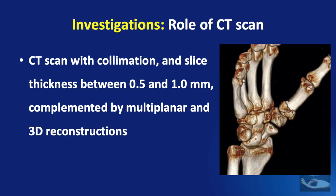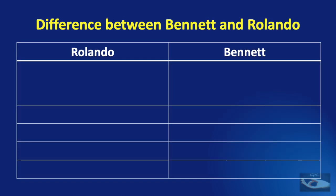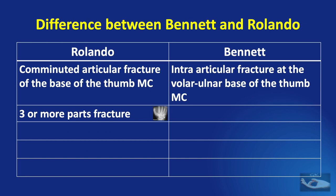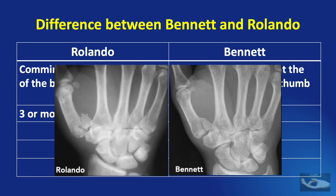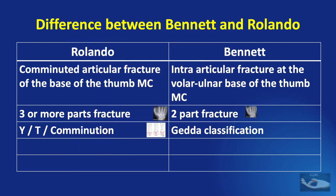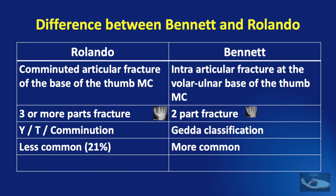The CT scan should be obtained with collimation and slice thickness between 0.5 to 1 mm, complemented by multiplanar and 3D reconstructions. The Rolando fracture is a comminuted articular fracture of the base of the thumb metacarpal with two or more segments, whereas the Bennett fracture is an intra-articular fracture at the volar-ulnar base with only a single fracture line — making the Bennett a two-part fracture and the Rolando a three-or-more-part fracture. The Rolando fracture can be classified as a Y or T configuration or comminution, while the Bennett fracture is classified by the Gedda classification. The Rolando fracture is less common and has a worse prognosis than the Bennett fracture.